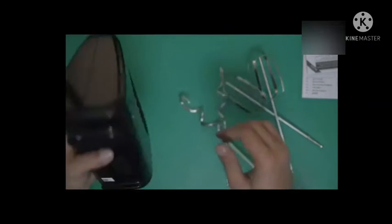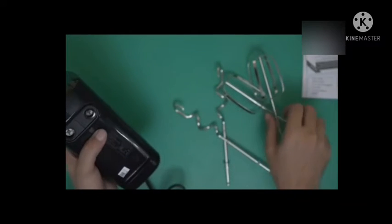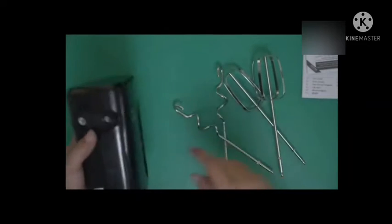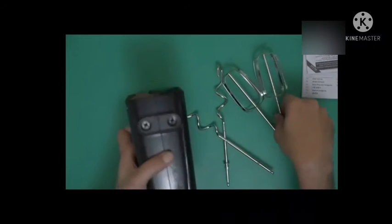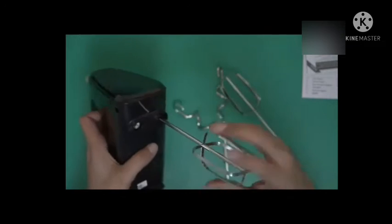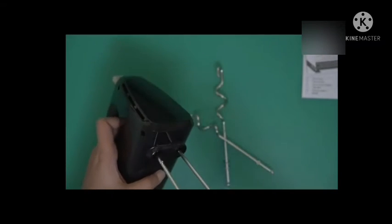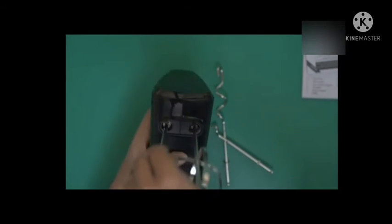This is basically the mixer. The idea is that the attachments go into these holes over here. I am going to put the beater in right now. So that's one. This is the other one. You can see this. Now you can see they are turning in tandem which is what they are supposed to do. They are not supposed to touch each other.